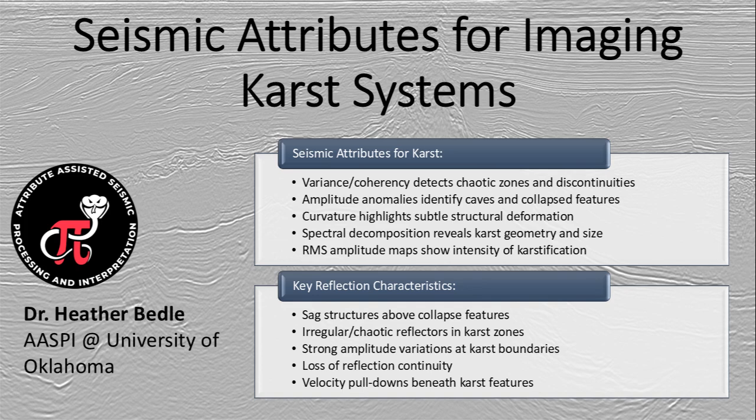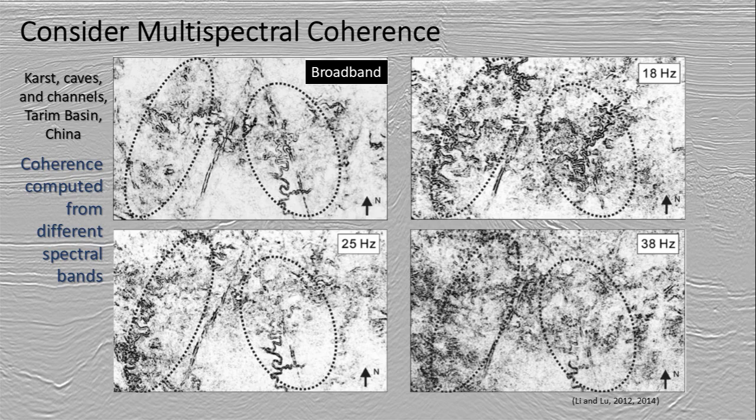Some of the attributes we want to use are geometric in nature, from looking at variance or coherence, as well as curvature to highlight the different structural features of the karst systems. You can also look for amplitude anomalies to identify caves and collapse features. One of those that you might try is RMS amplitude. And spectral decomposition can also help you reveal karst geometry. One feature that's been really good to use is multispectral coherence, so I urge you to consider this.